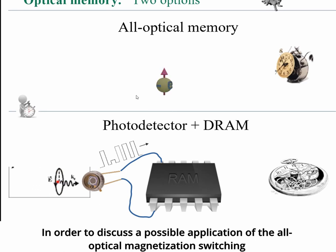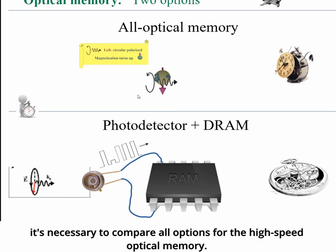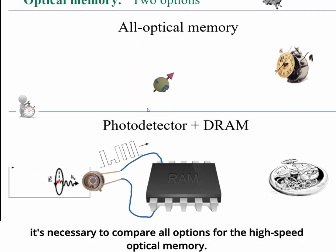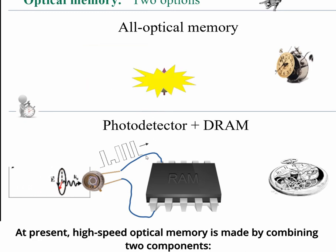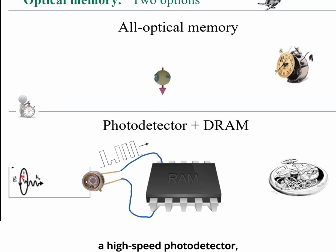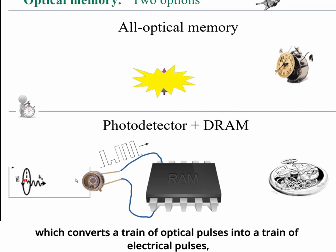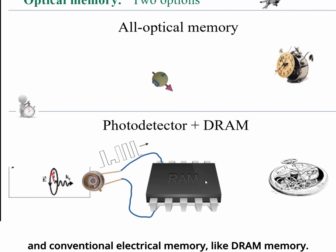In order to discuss a possible application of all-optical magnetization switching for high-speed optical memory, it is necessary to compare all options for high-speed optical memory. At present, high-speed optical memory is made by combining two components: a high-speed photodetector, which converts a train of optical pulses into a train of electrical pulses, and conventional electrical memory like DRAM.